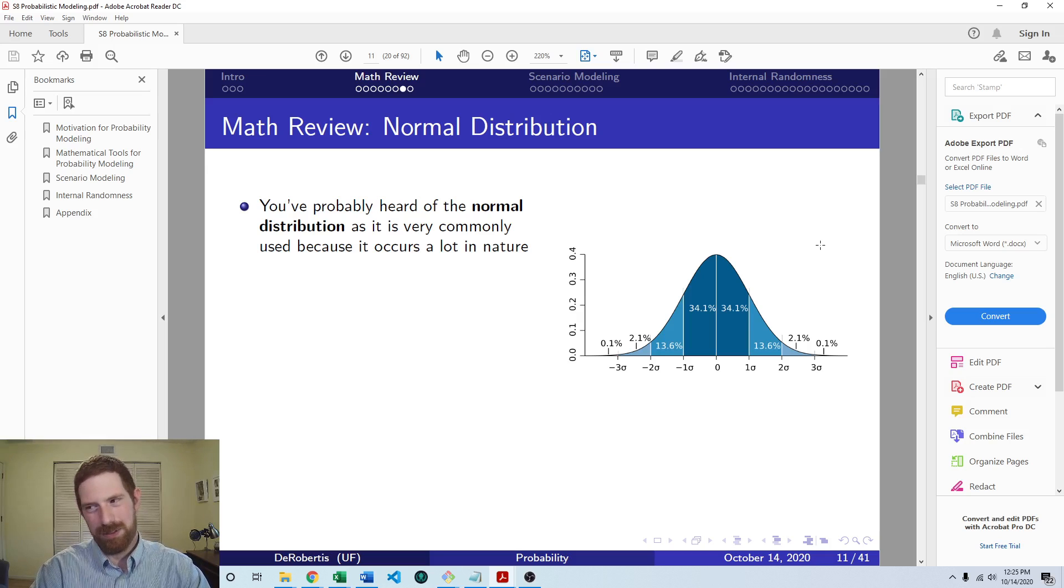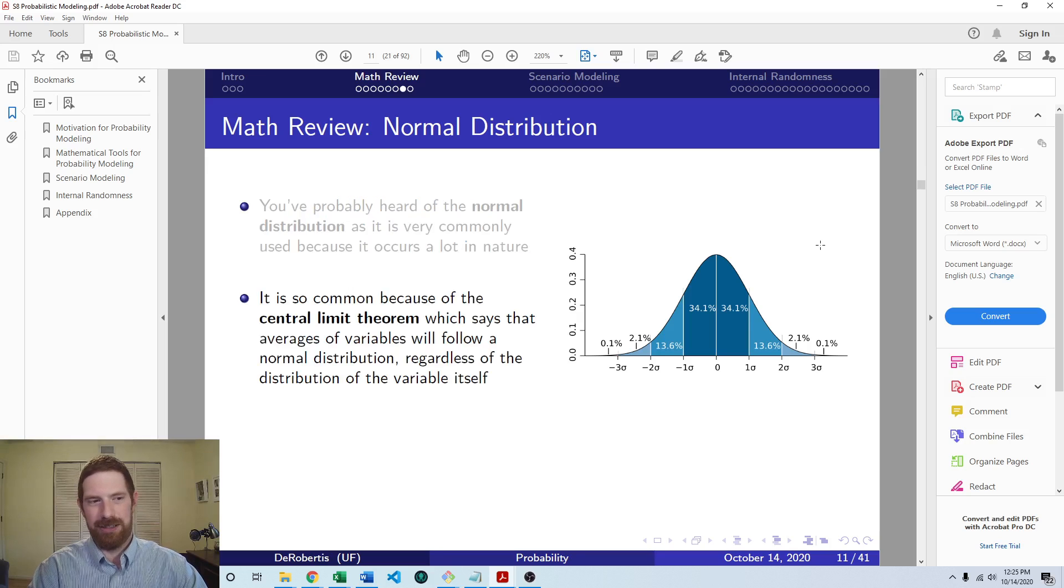So then we're talking specifically about the normal distribution as a type of probability distribution for continuous variables. And you've probably heard about the normal distribution before, because it's very common in nature. And that's because of the central limit theorem, which is extremely powerful and important, which says that any average of random variables is going to be normally distributed, regardless of the distribution of those original random variables that you averaged.